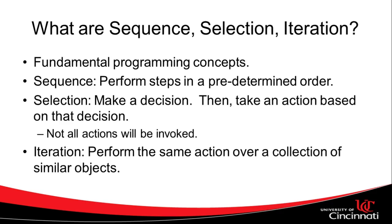Sequence performs steps in a predetermined order. Selection means we're going to make a decision and take an action based on that decision. In other words, if it's cold out, I will wear a coat. If it's not cold out, I will not wear a coat. The temperature outside is going to determine whether or not I wear a coat. That is selection. Only one of the two outcomes will happen.